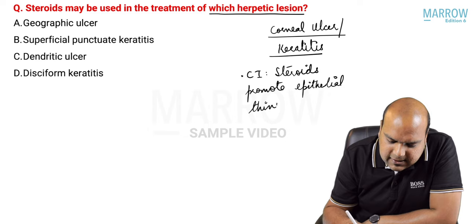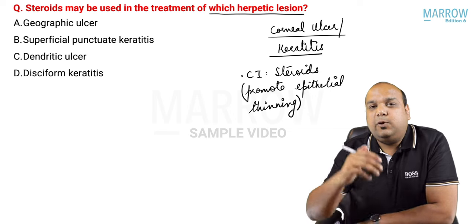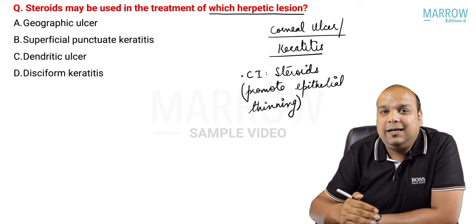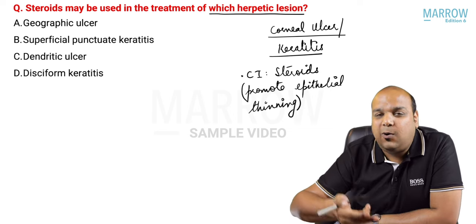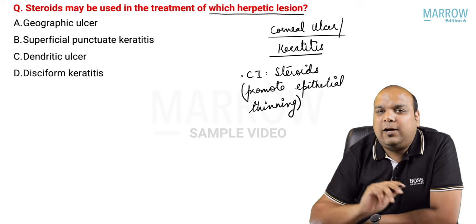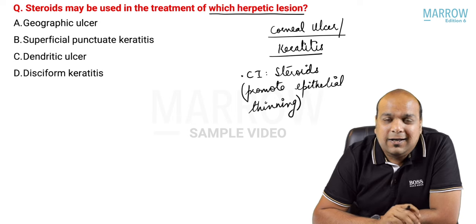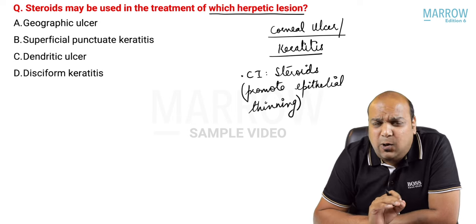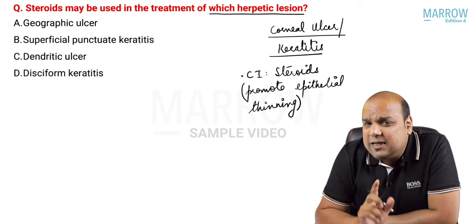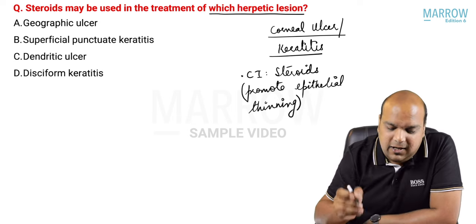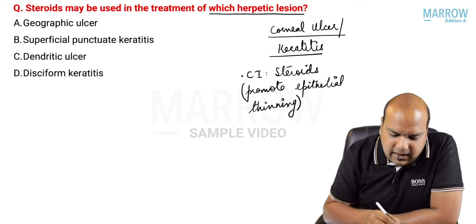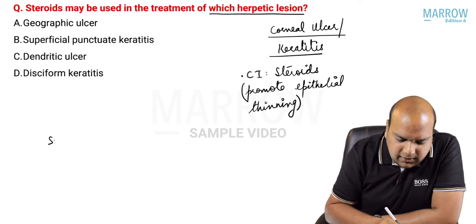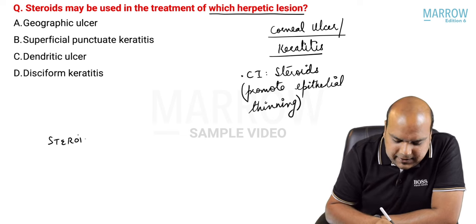In a case of ulcer, I actually need the epithelium to repair itself. If steroids are promoting epithelial thinning, they are causing the opposite of what I want. That is why in all epithelial lesions, steroids are contraindicated.